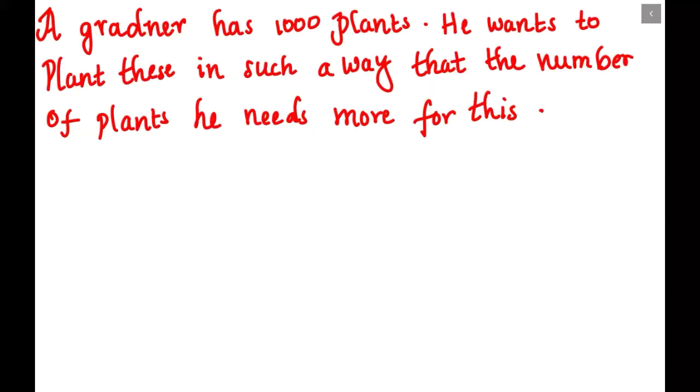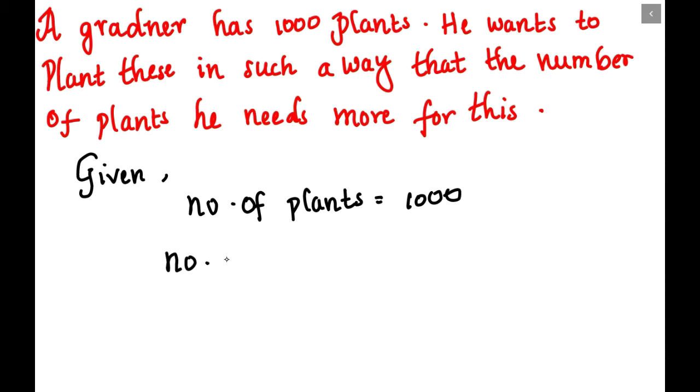First let us write the given values. Given that the number of plants is a thousand. Now they have said that the number of rows is equal to the number of columns.